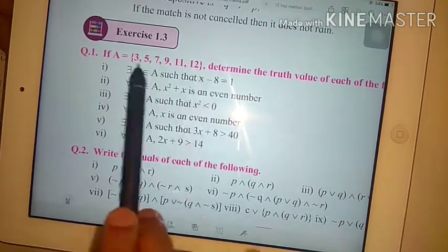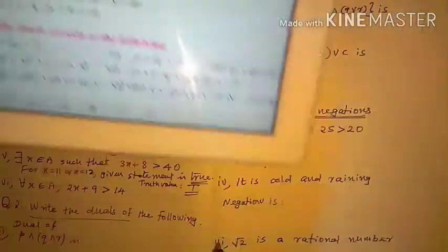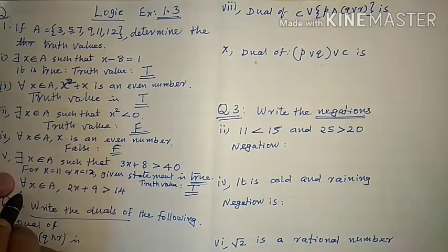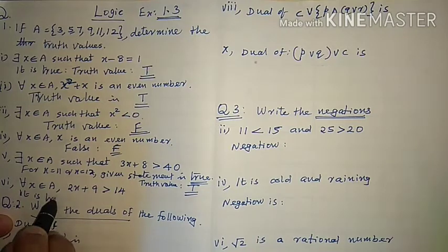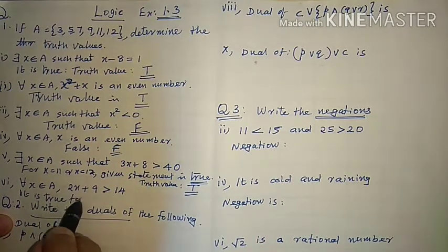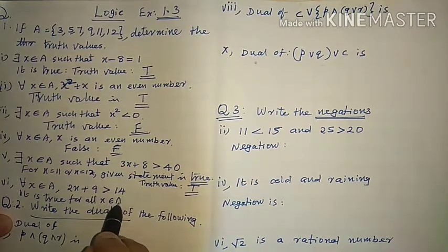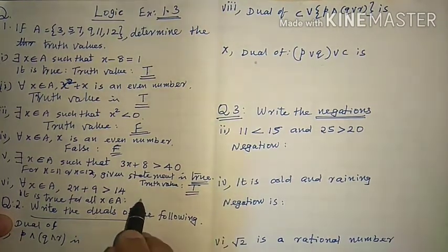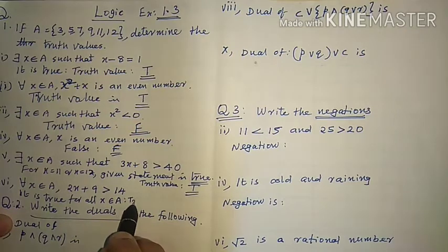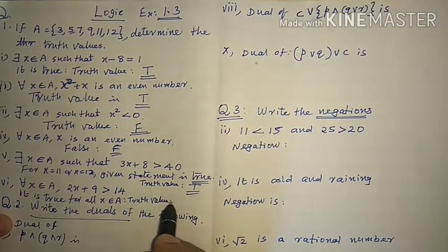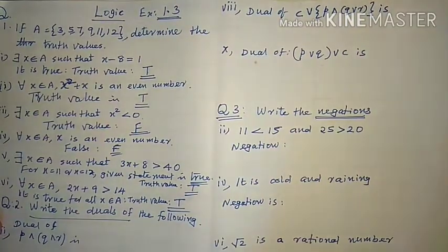All values satisfy the condition. So 'for all x belongs to A, 2x + 10 > 14' is true for all elements. Truth value is T. This completes question number 1 of the exercise.